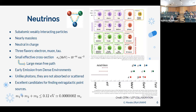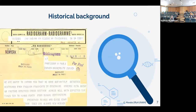No se conoce bien la masa de los neutrinos; no hay un valor fijo, sino cotas a las masas. Contrario al resto de las partículas del modelo estándar, que se encuentran en el rango de mega-electronvolts o superior, los neutrinos se cree que estén acotados en energías muy pequeñas. No hay experimentos que midan las masas individuales, pero se cree que la suma de los tres neutrinos no supera 0.2 electronvolts, lo cual corresponde a una fracción pequeñísima de la masa del electrón.